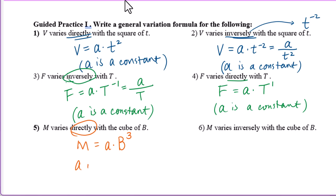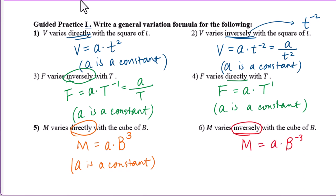Question 6: M varies inversely with the cube of B. Inversely means a negative exponent, so B to the negative third power. M equals A times B to the negative third power, which equals A over B to the third power. A is a constant.